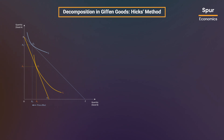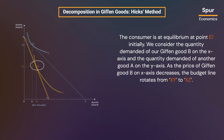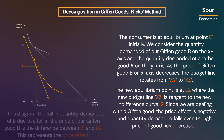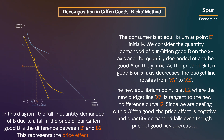Let us take a look at the diagram shown here. The consumer is at equilibrium at point E1 initially. We consider the quantity demanded of our Giffen good B on the x-axis and the quantity demanded of another good A on the y-axis. As the price of Giffen good B on the x-axis decreases, the budget line rotates from XY to XC. The new equilibrium point is at E2 where the new budget line XC is tangent to the new indifference curve I2. Since we are dealing with a Giffen good, the price effect is negative and quantity demanded falls even though the price has decreased. The fall in quantity demanded of B is the difference between B1 and B2, representing the price effect.